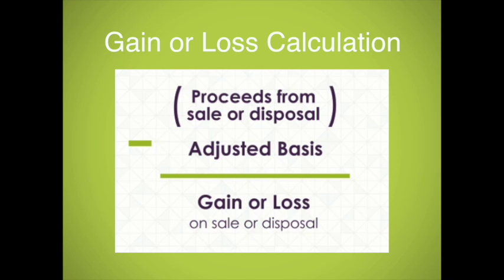If you dispose of an asset without selling it, you may have zero proceeds. Or if you receive any amount for disposing of the property — for example, say you scrap metal — then include that amount as the proceeds.